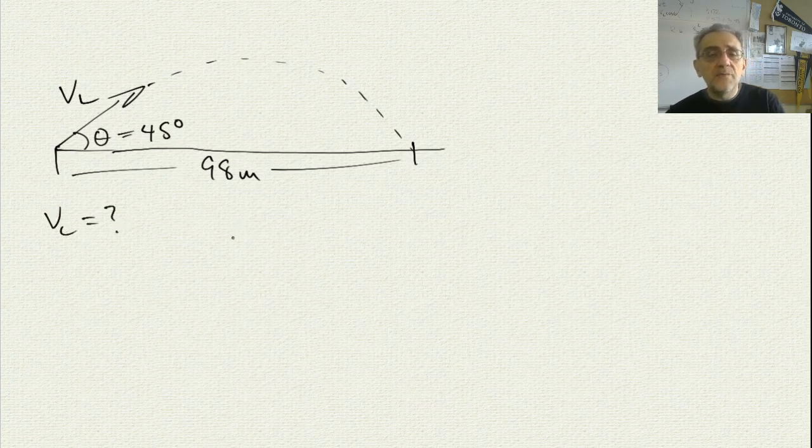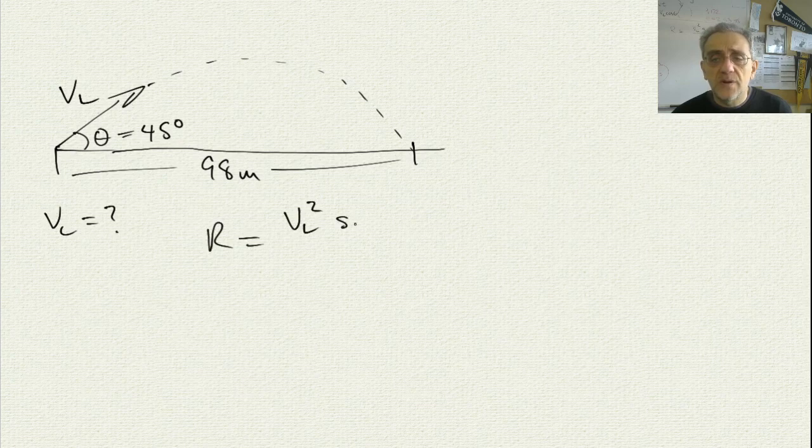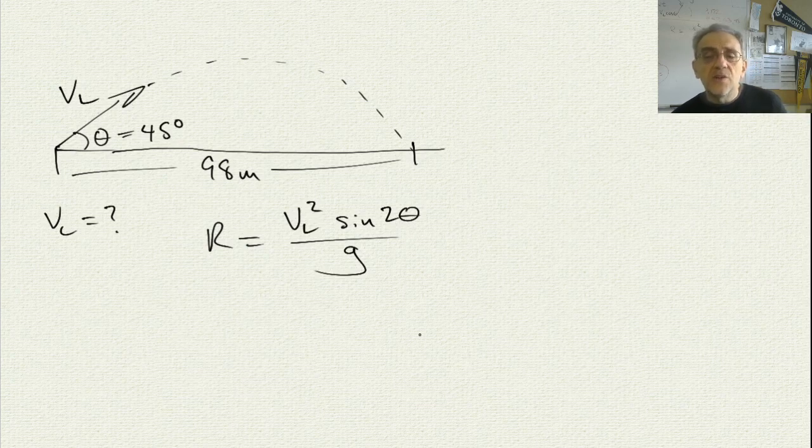So, again, we don't need to solve this from scratch anymore because we can use our range equation. And range is VL squared sine 2 theta divided by G. However, in this case, we are solving for VL. So, we do have to do a little bit of algebra to solve for the launch velocity.